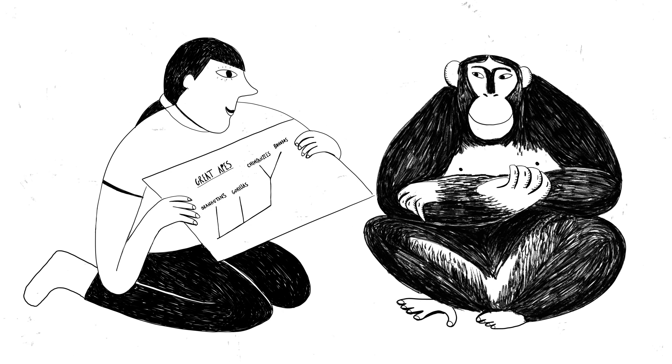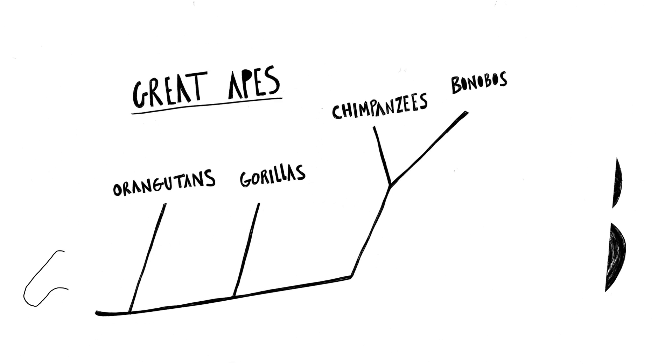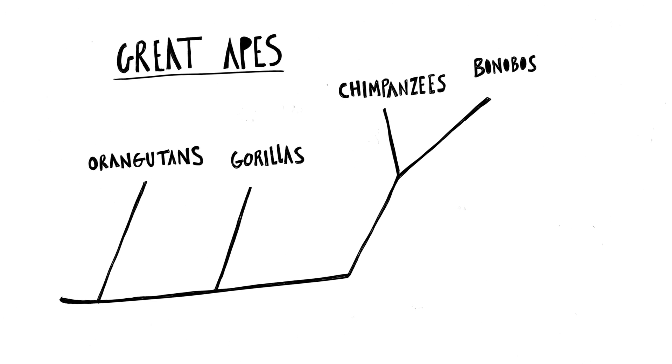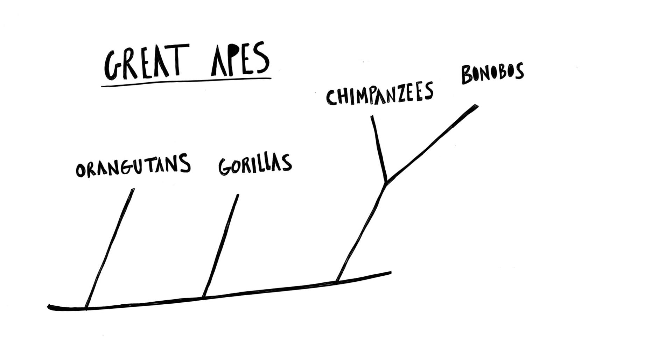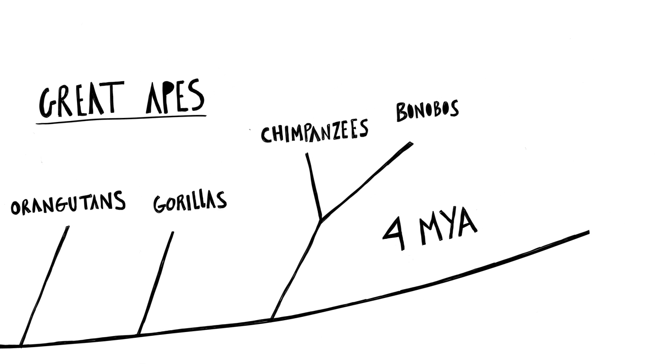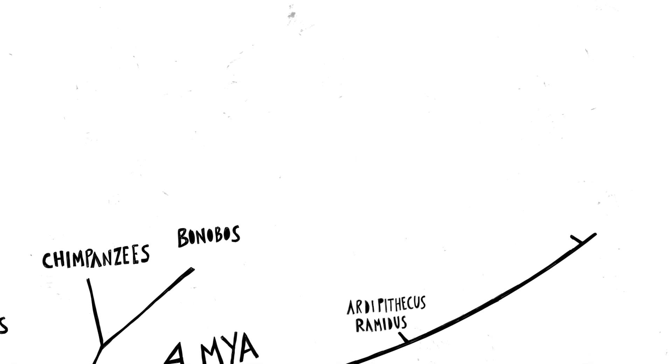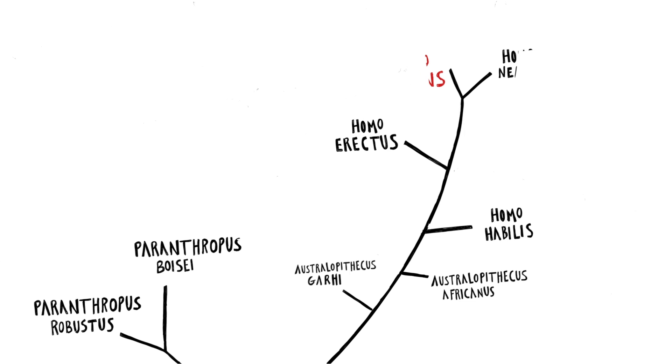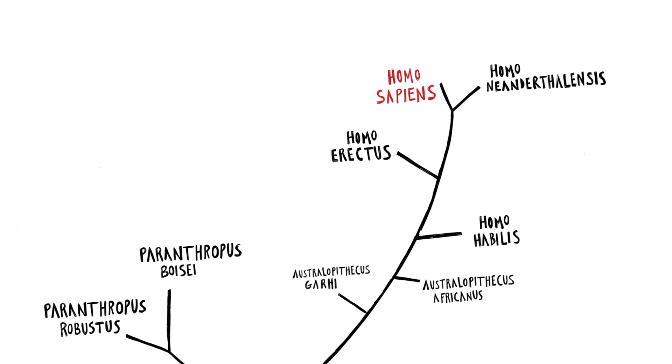Exactly when we acquired this capacity is still an open question. Chimps and bonobos are our closest living relatives, but the lineage leading to humans split from the other great apes more than 4 million years ago. In between, there were many species, all of them now extinct, which makes it very difficult to know if they had language or anything like it.